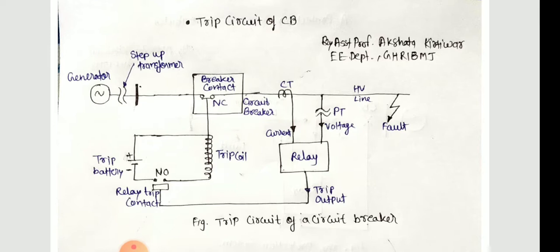So what exactly is the trip circuit of a circuit breaker? You can see the schematic of the trip circuit of a circuit breaker. The circuit breaker contacts are in a closed position by the force of spring. Energy is stored in the spring during the closing operation.